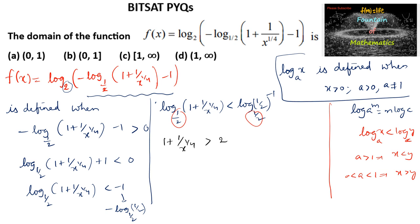We rearrange: (1/x)^(1/4) + 1 − 2 = (1/x)^(1/4) − 1 is greater than 0, giving us (1 − x^(1/4)) / x^(1/4) is greater than 0. This means 1/x^(1/4) is greater than 1, so x^(1/4) must be less than 1.